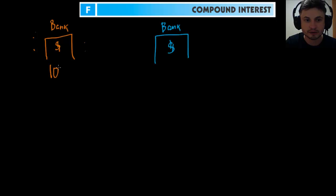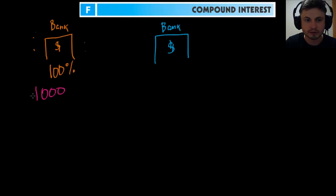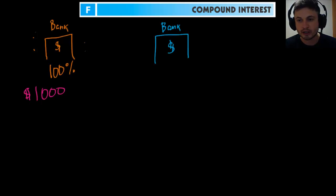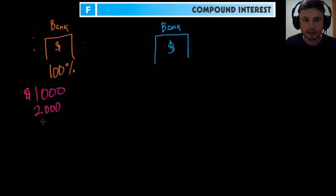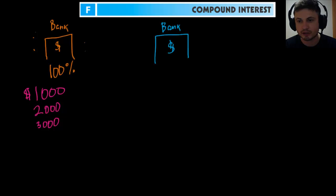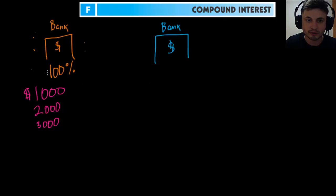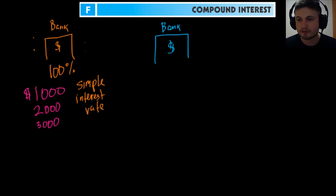Orange Bank offers a simple interest rate of 100%. So basically, if you give them a thousand dollars, they will give you an annual return of 100%. After two years you'd have two thousand dollars, after three years three thousand dollars, and so on. After ten years you'd have ten thousand dollars. This is simple interest — also known from our previous video as an arithmetic sequence.